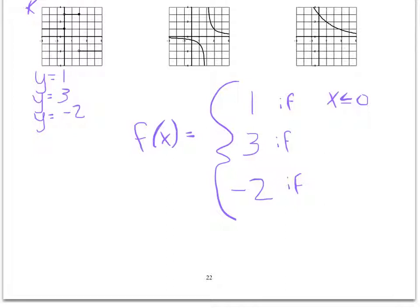And then my equation, y equals 3, appears to extend from x equals 0 to x equals 2. So sandwiching x between 0 and 2. And I'm not going to include the 0 because it's an open dot, but I will include the 2 because it's a closed dot.